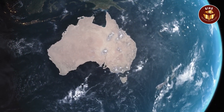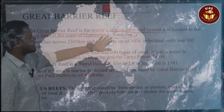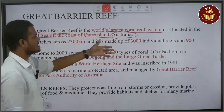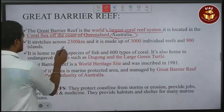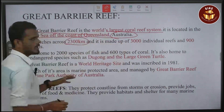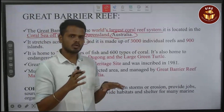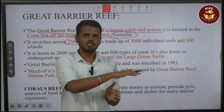It is located in the Coral Sea off the coast, which is part of the Coral Reef system. It stretches across 2,300 km in range.